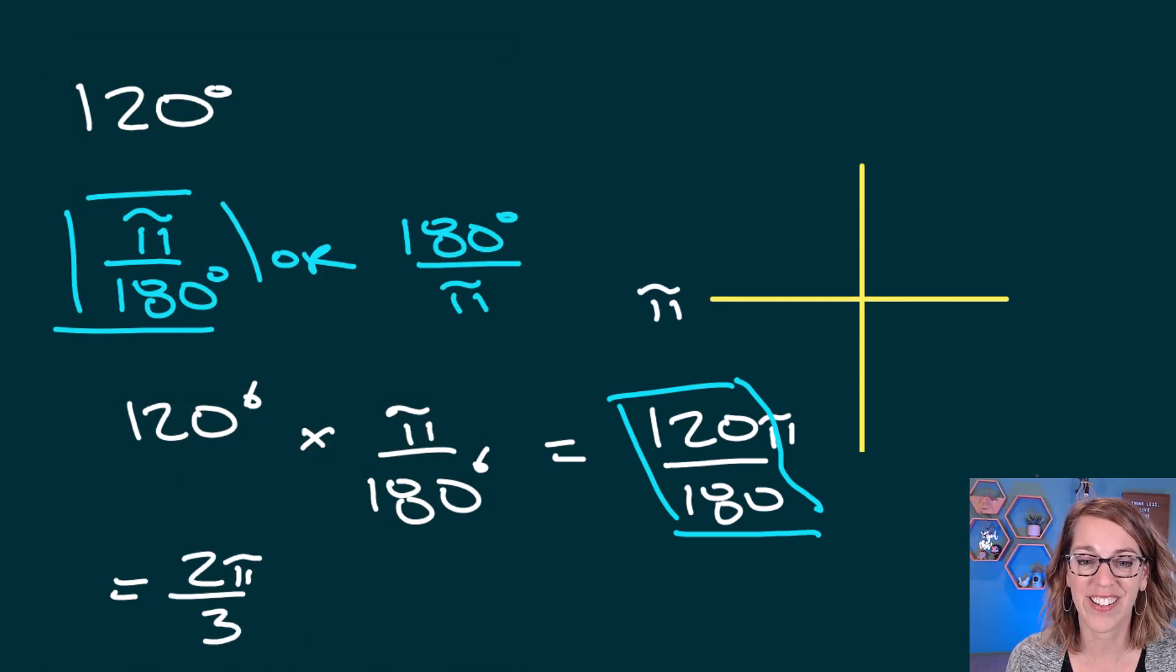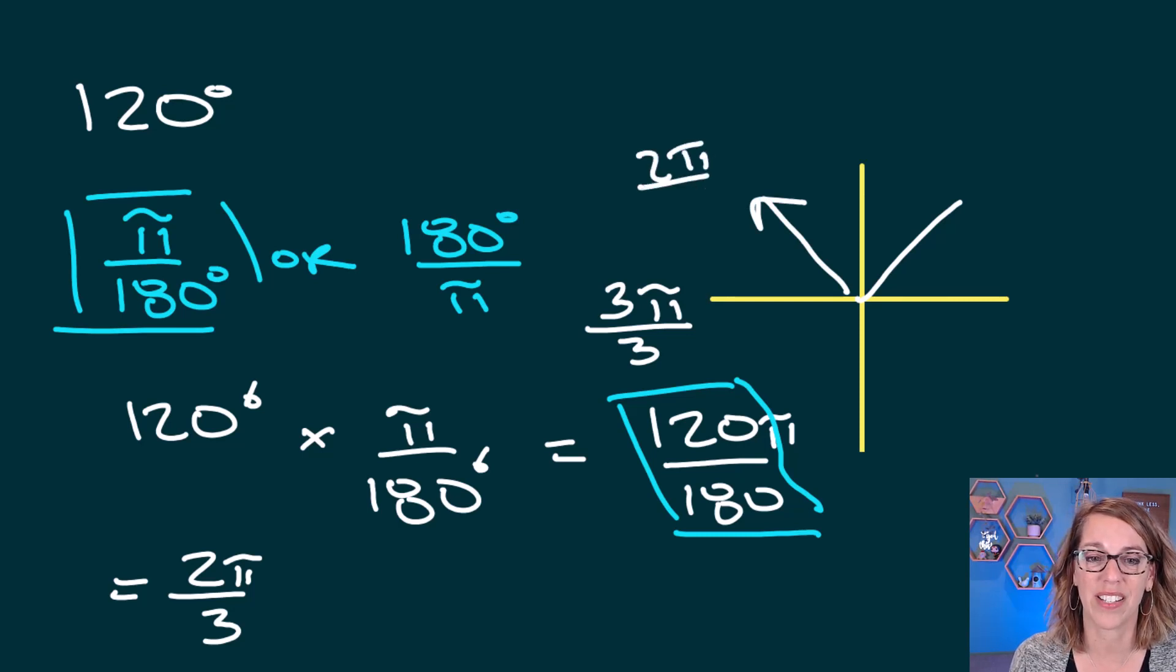Well, I know that π is here. That's the same as 3π/3. This would be π/3. So 2π/3 is going to be right here.